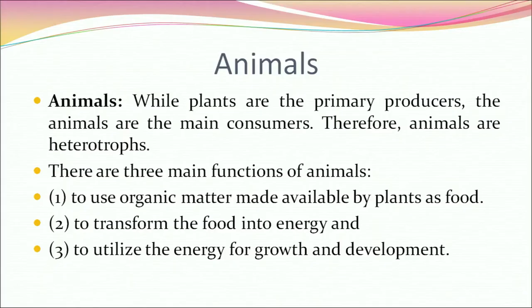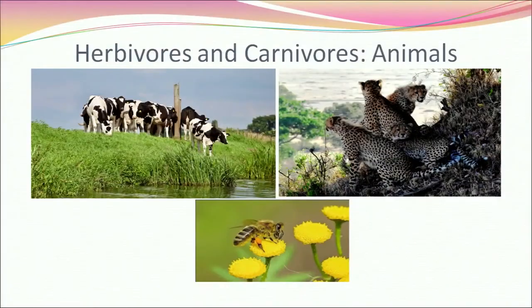While plants are the primary producers, animals are the main consumers and therefore are heterotrophs. There are three main functions of animals: to use organic matter made available by plants as food, to transform that food into energy, and to utilize the energy for growth and development.